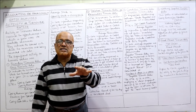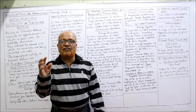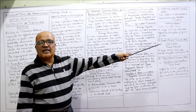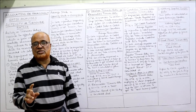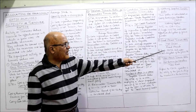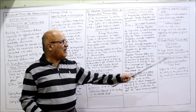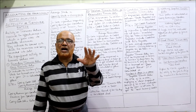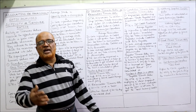The fifth ratio is Fixed Assets Turnover Ratio. The formula is: Net Sales (or Revenue from Operations) divided by Fixed Assets. A high fixed assets turnover ratio indicates better utilization of the firm's fixed assets.